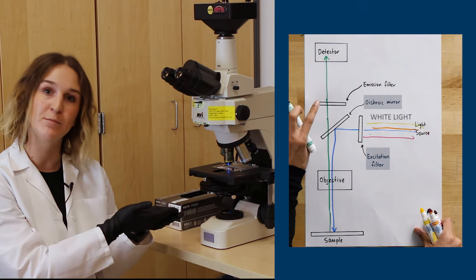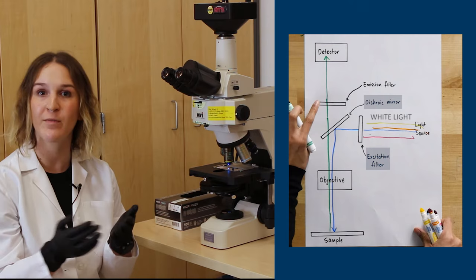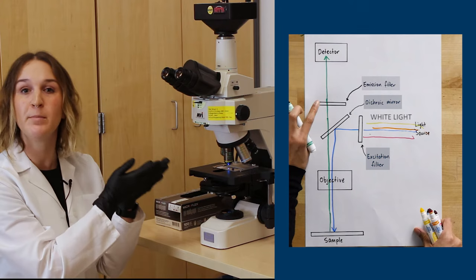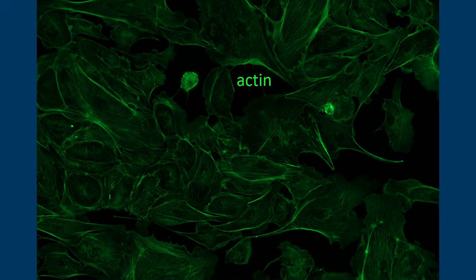That blue light will excite our fluorescent molecules and those molecules will then emit green light, a slightly longer wavelength of light. That light will be collected by our objective lens. It will be filtered through our emission filter and arrive at our detector or camera.